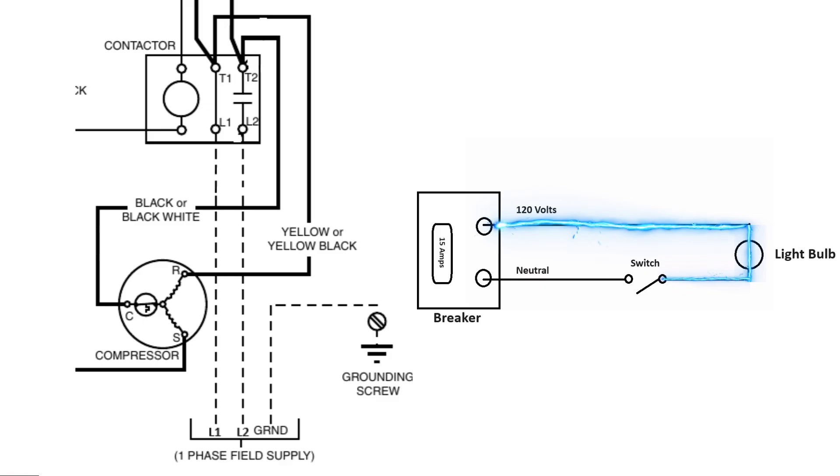These dotted lines is our whip coming from our disconnect box, bringing power into the condensing unit. Now you'll notice down here, we have L1 and L2. L is for line. That's your line voltage. So you have 120 volts on each one of these lines.